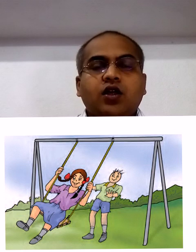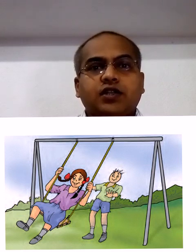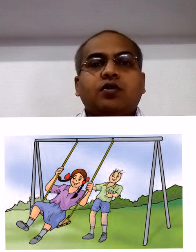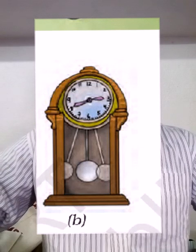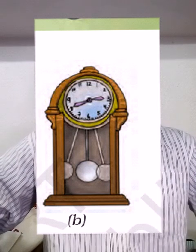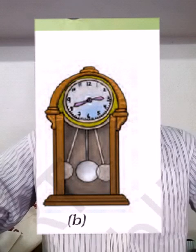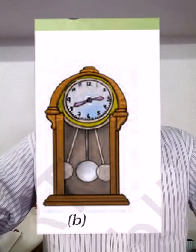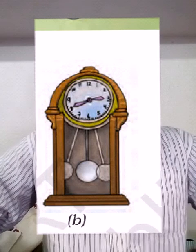Today we will discuss periodic motion. When an object repeats its motion in a fixed interval of time, it is called periodic motion. For example, the pendulum of a wall clock — the body moves and repeats its motion at a fixed interval of time.